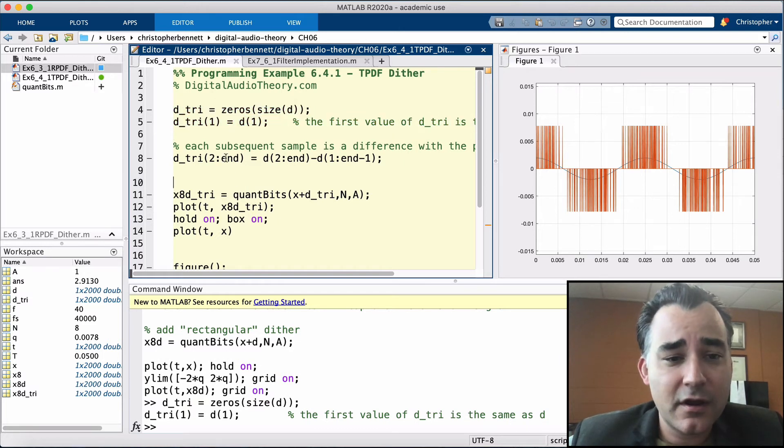Now look at this. For the second sample of the triangular all the way to the end, we're going to take whatever that corresponding value was in the RPDF dither, so wherever we are here on triangles, equal to the same one on the rectangular one minus the RPDF dither value from the preceding sample. So we're going to take all the values from the second sample to the end and subtract from that the preceding sample, the first sample to the end minus one. So this is going to get us our backwards differencing.